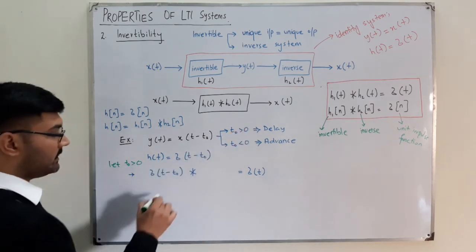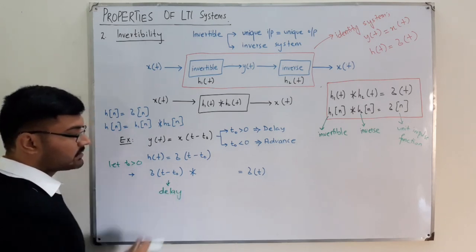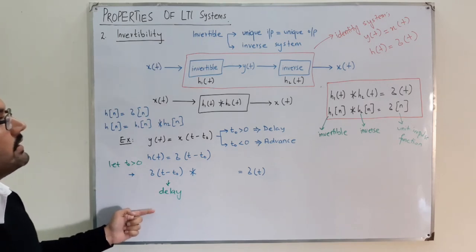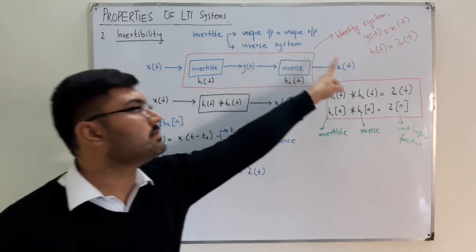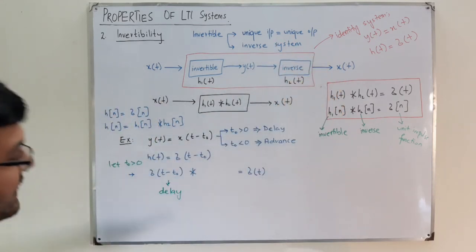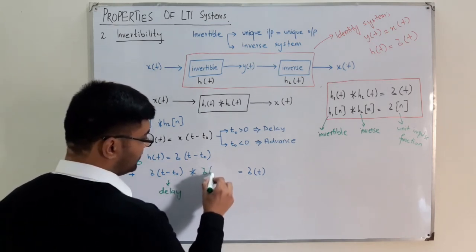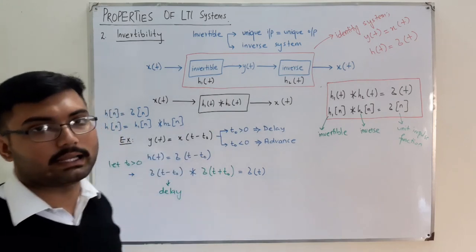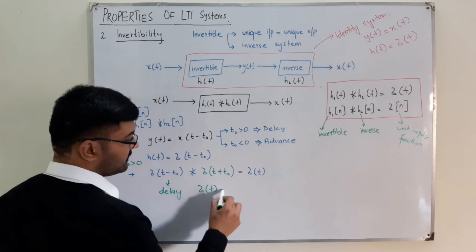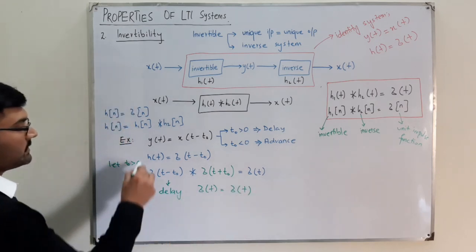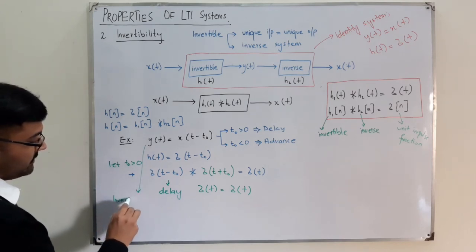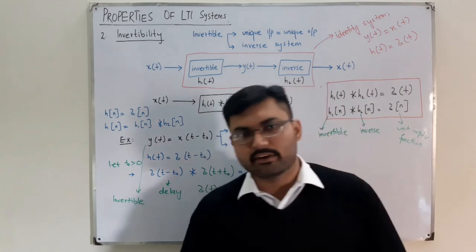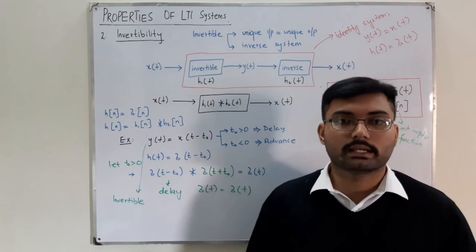If t₀ is positive, the system delays the signal. To recover the original signal, the inverse system must advance it, having impulse response δ(t + t₀). Convolving δ(t − t₀) with δ(t + t₀) gives δ(t), satisfying the identity system criterion. Therefore, the delay system is invertible. That concludes the second property; the next two properties will be discussed in the next video.